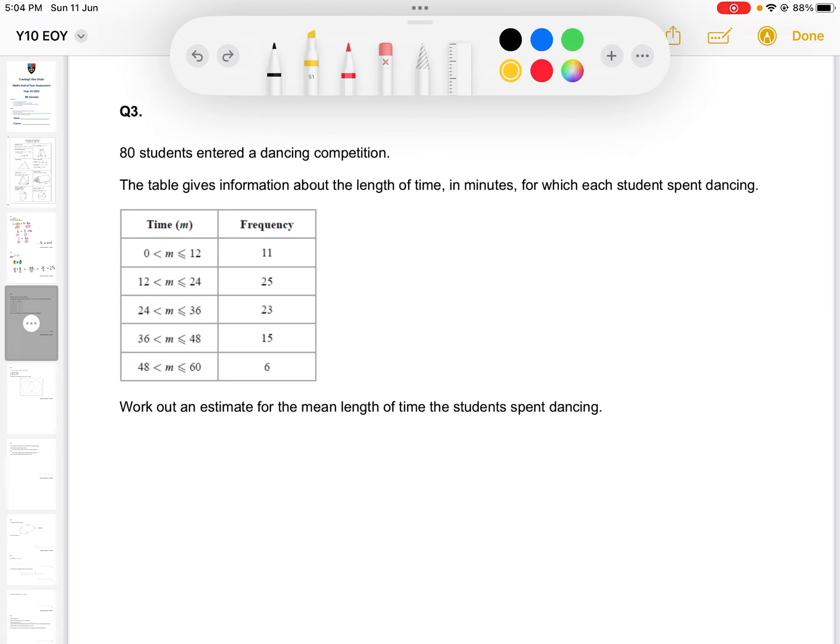So whenever you're looking to find the estimate of the mean, the reason why it's an estimate question is because you've been given these intervals. You do not have exact numbers to deal with, so we take our best guess or our best estimate by finding the middle of each of these groups.